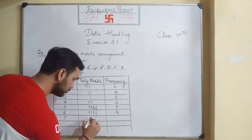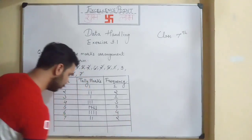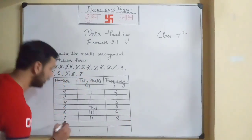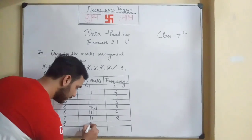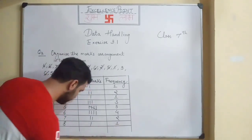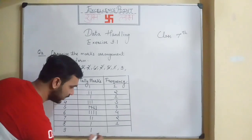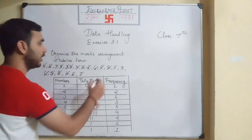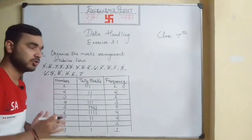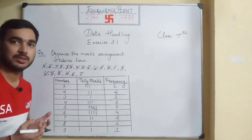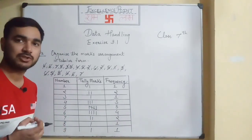For seven, it is occurring two times, so we write one, two and two in the frequency column. Eight is occurring only one time, so we write one. For nine, nine is occurring one time, so we write one. We have now made a frequency distribution table.